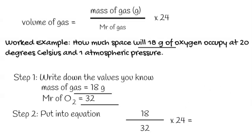If we put these into a calculator, that gives us 13.5 decimeters cubed. So that tells you that 18 grams of oxygen occupies 13.5 decimeters cubed of volume.